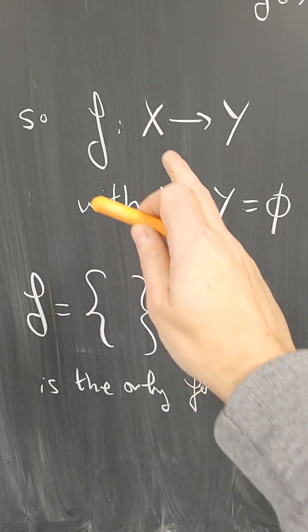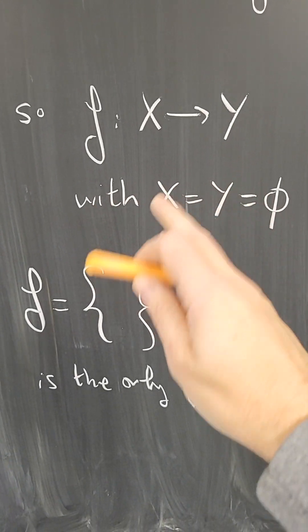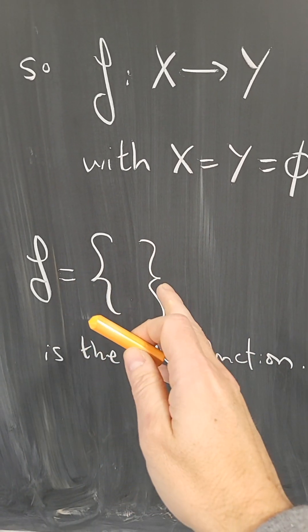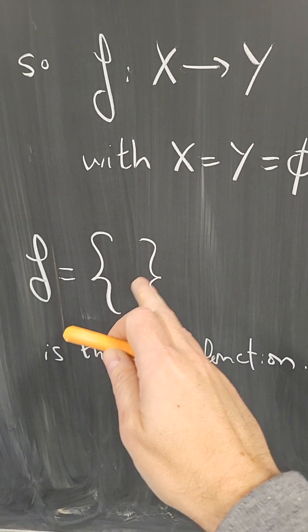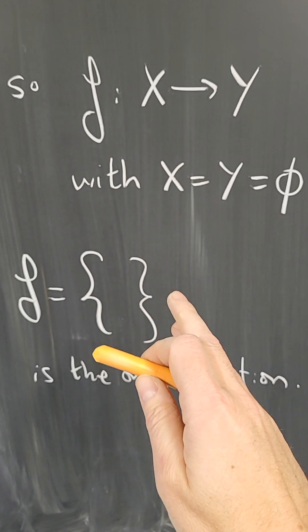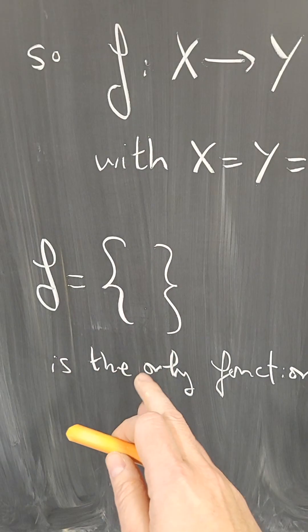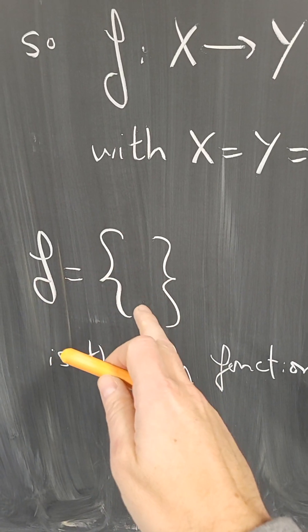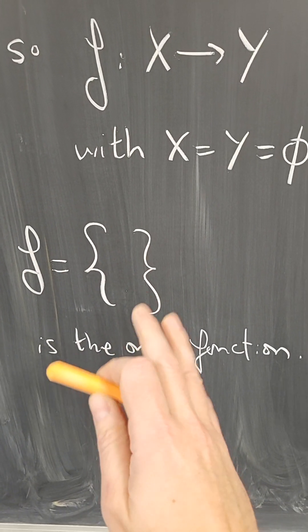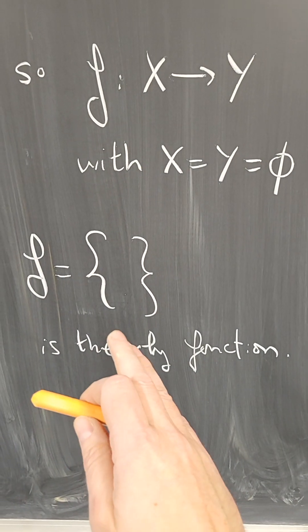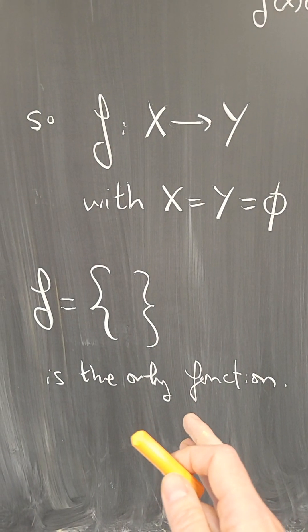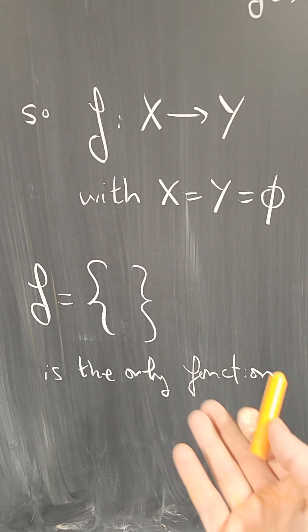So what is a function from the empty set to the empty set, and how many are there? Well, it has to be a set of pairs with one pair for each element of x. Since there are none, there are no pairs. But this is, in fact, a function. This empty set of pairs is a function, and it's the only possible function. So there is exactly one function from the empty set to the empty set, and therefore 0 to the 0 is 1.